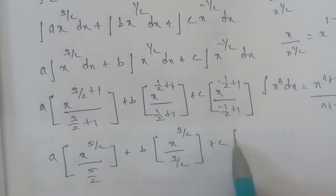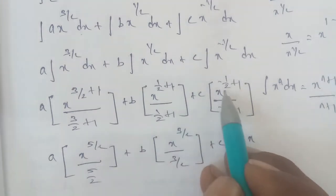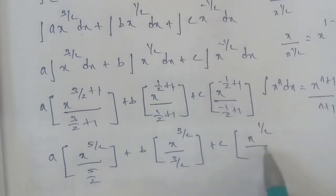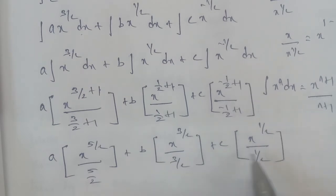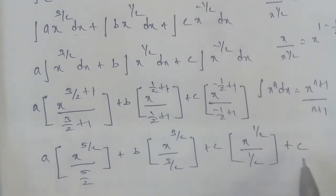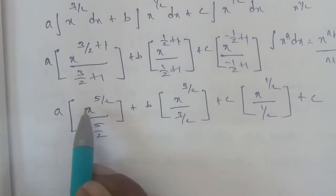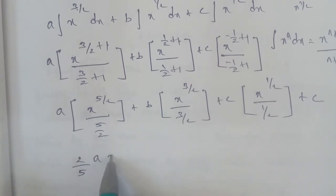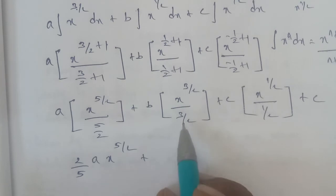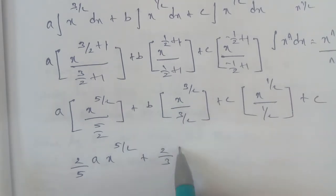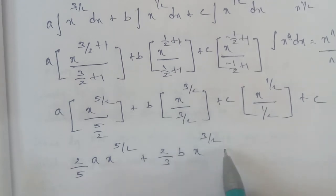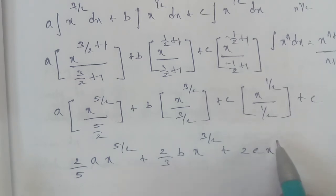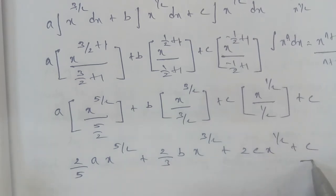For the third term, n equals minus 1 by 2: x power of minus 1 by 2 plus 1 gives x power of 1 by 2, divided by 1 by 2, plus constant c. The final answer is: (2 by 5) · A · x^(5/2) + (2 by 3) · b · x^(3/2) + (2 by 1) · c · x^(1/2) + c. That is the complete answer.